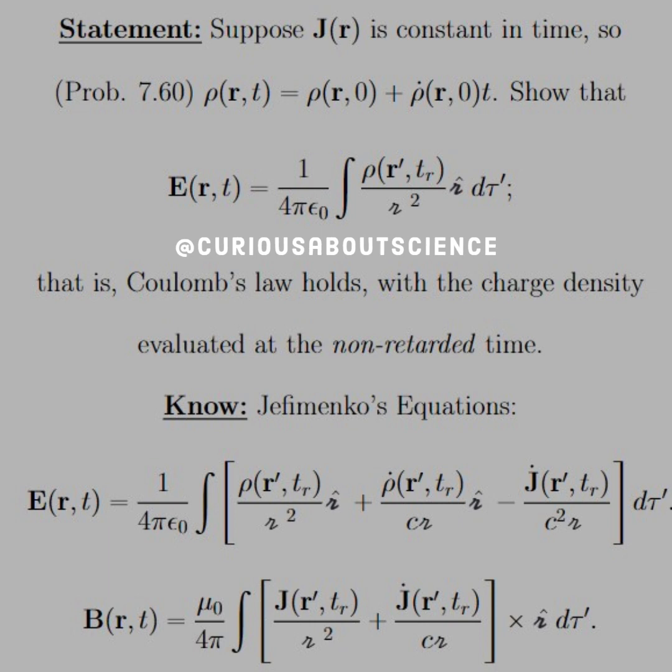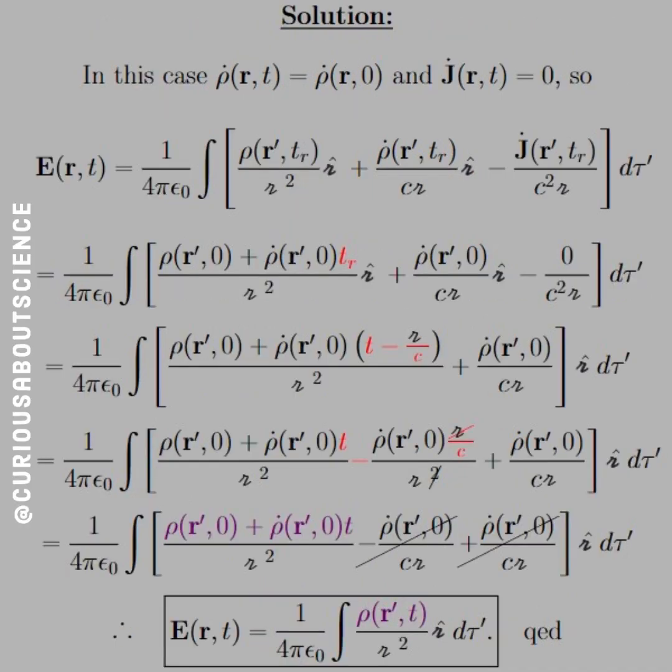So, I'll let you read those because they are not easy. But, thankfully, with what we found in Chapter 7, this problem can be pushed along pretty quickly, in my opinion. So, in this case, we know that the rho dot is equal to rho dot R at 0, and we know that J dot R of T is 0.